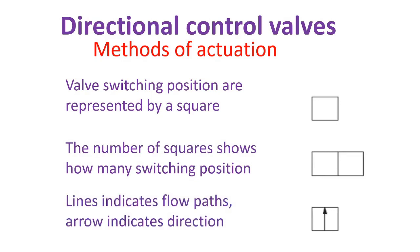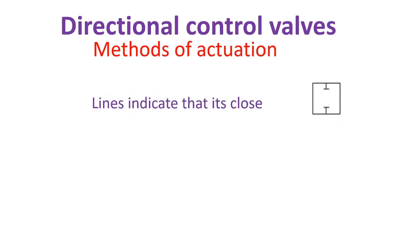Lines indicate flow path. Arrows indicate direction. Lines indicate that it's closed. Connection outside the box or valve.